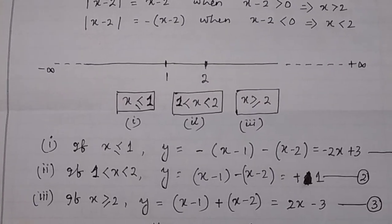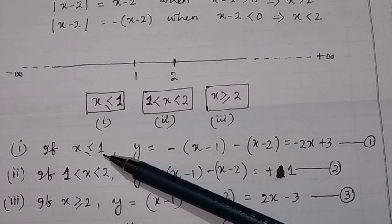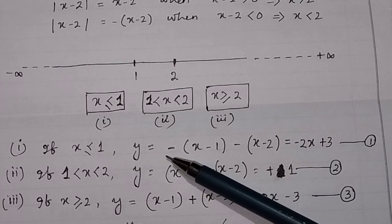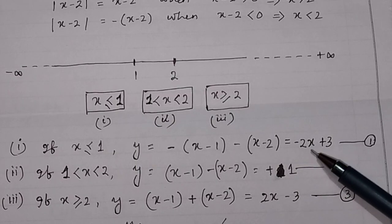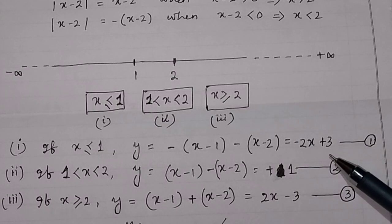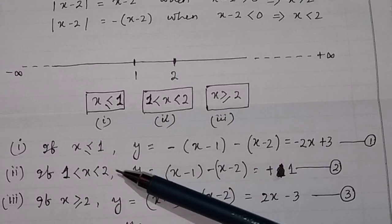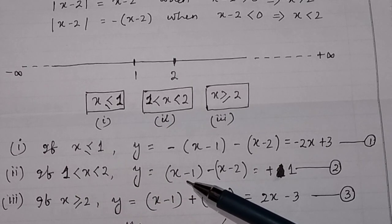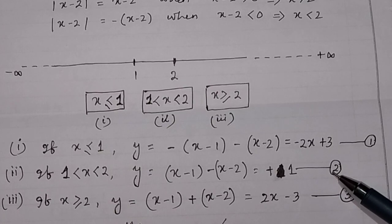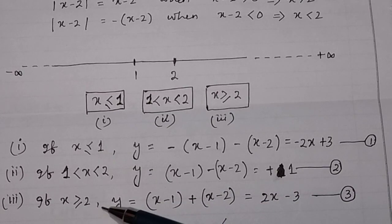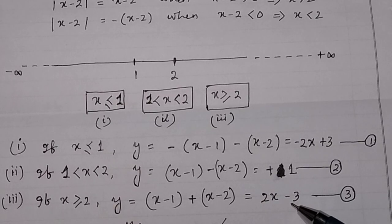Let us see the three equations. If x is less than or equal to 1, y will be equal to minus(x - 1) minus(x - 2), which equals minus 2x plus 3. When x lies between 1 and 2, y equals (x - 1) minus (x - 2), which equals 1. And when x is greater than or equal to 2, y equals (x - 1) + (x - 2), which equals 2x minus 3.